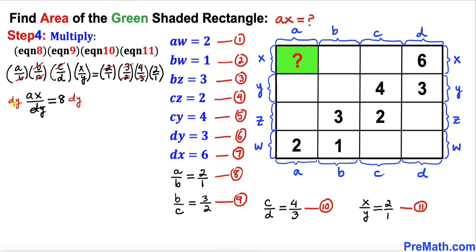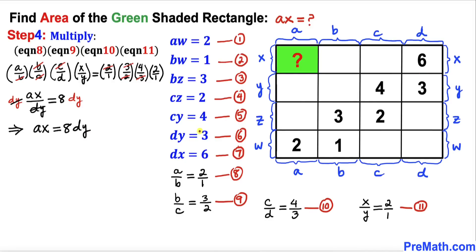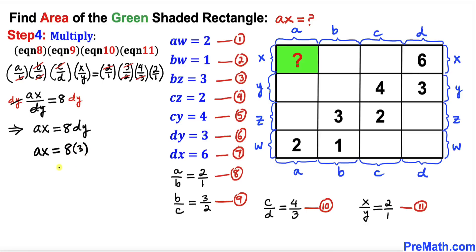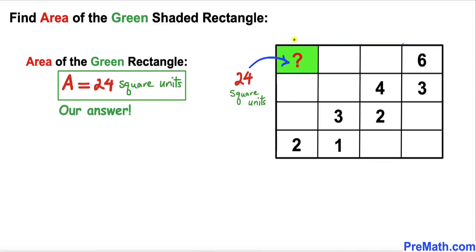Multiplying both sides by dy to isolate ax: the dy's cancel, giving ax equals 8 times dy. From equation 6, our dy value is 3, so ax equals 8 times 3, which equals 24. The area of the green rectangle turns out to be 24 square units. That's our final answer. Thanks for watching, and please don't forget to subscribe to my channel for more exciting videos!